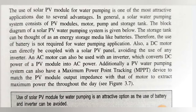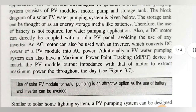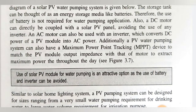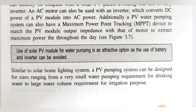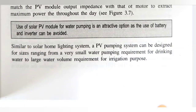A DC motor can directly be coupled with the solar PV panel, avoiding the use of any inverter. An AC motor can also be used with an inverter which converts DC power of a PV module into AC power. Additionally, a PV water pumping system can also have a maximum power point tracking (MPPT) device to match the PV module output impedance with that of the motor power, to extract the maximum power throughout the day. The use of batteries and inverters can be avoided, which is why it is an attractive system.